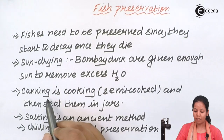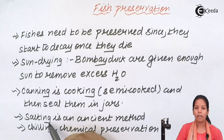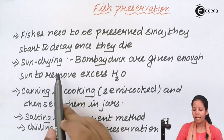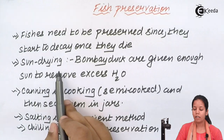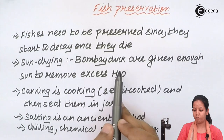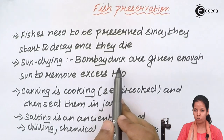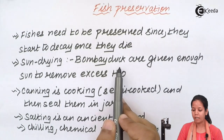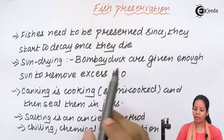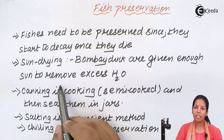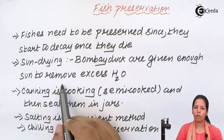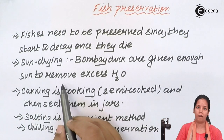Sun drying, canning, and salting are a few of the common methods. In sun drying, especially one of the commonly known fishes, Bombay duck, is given enough sun so that excess water is leached out and they can have a longer shelf life.